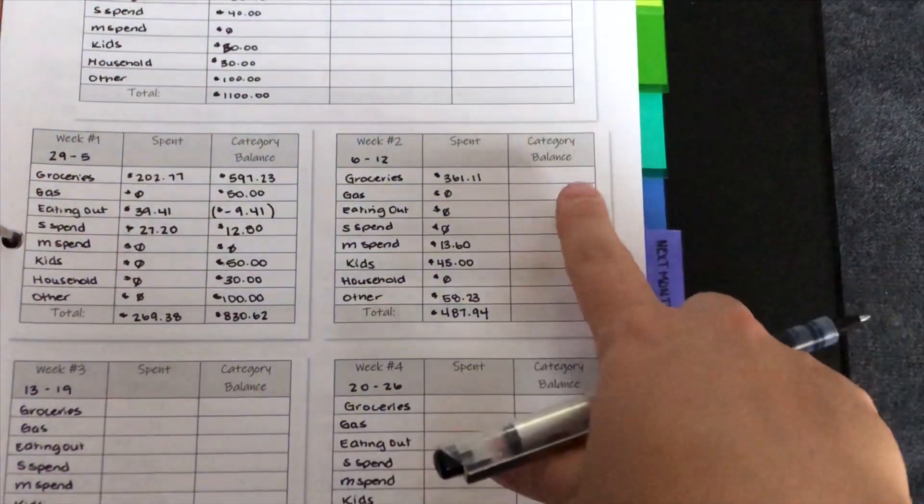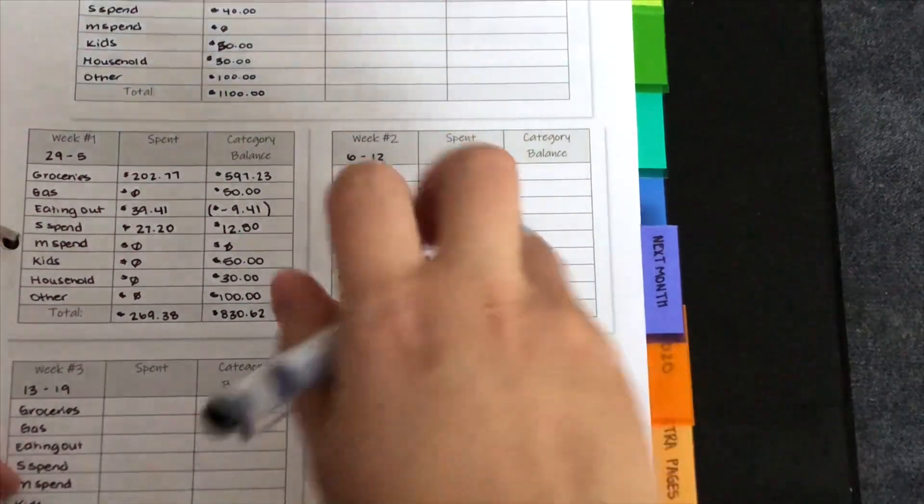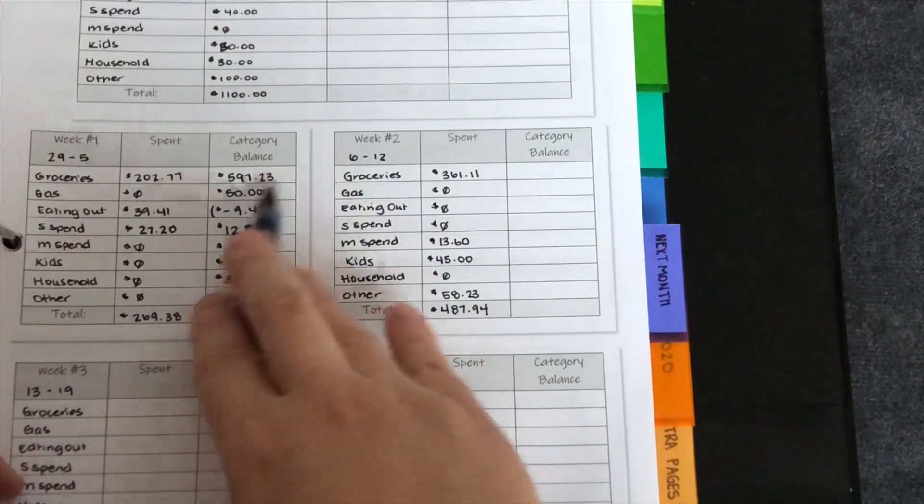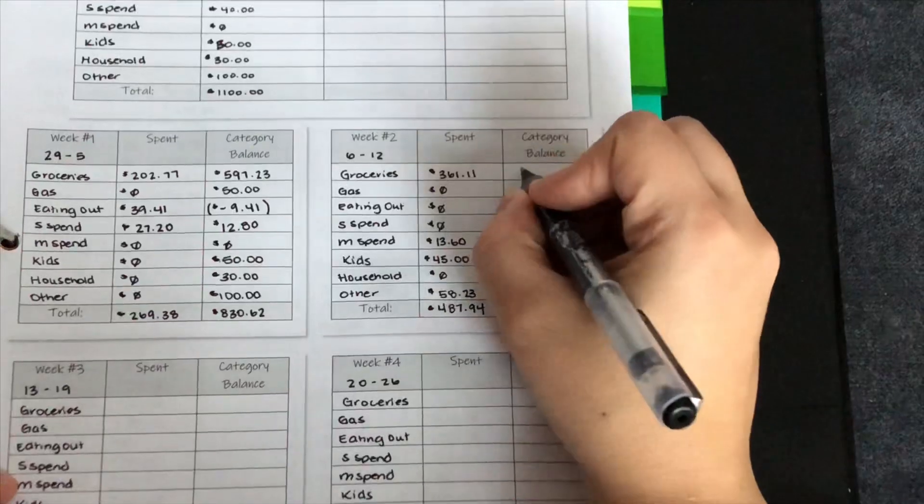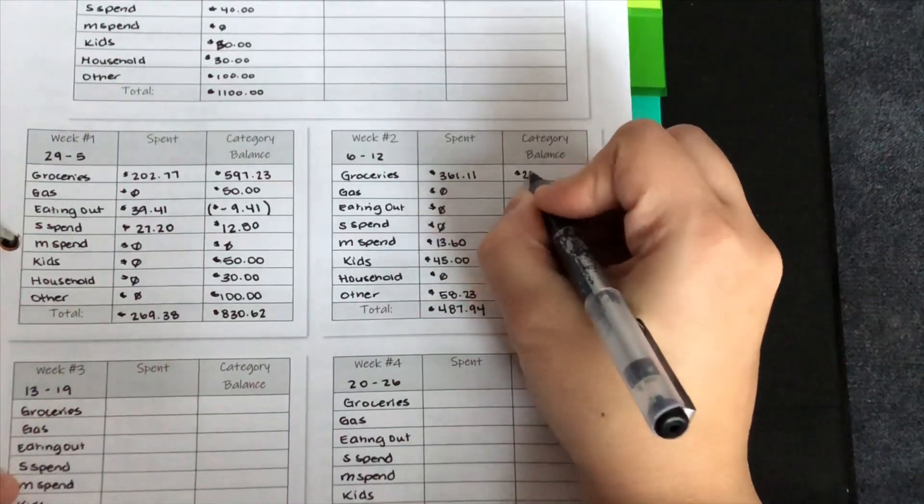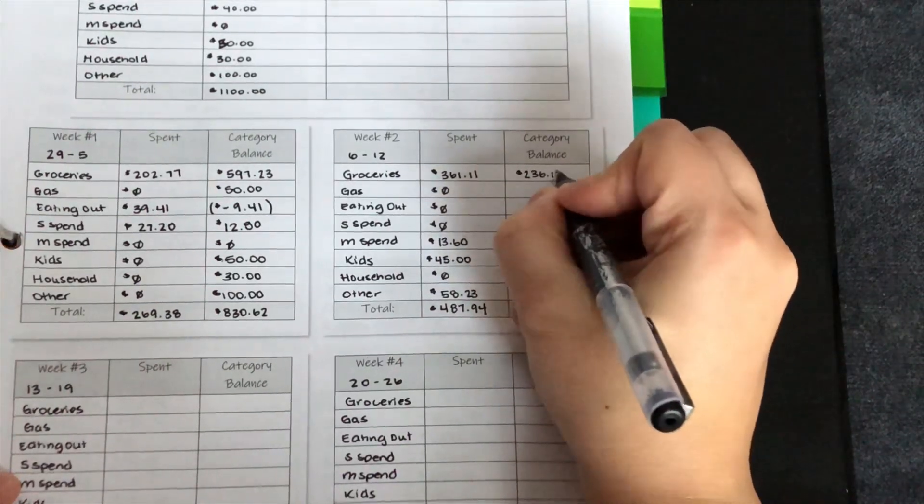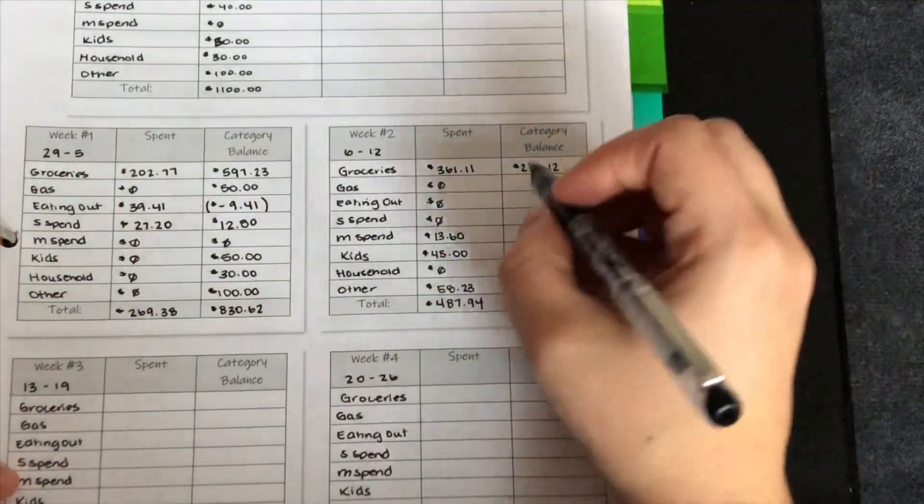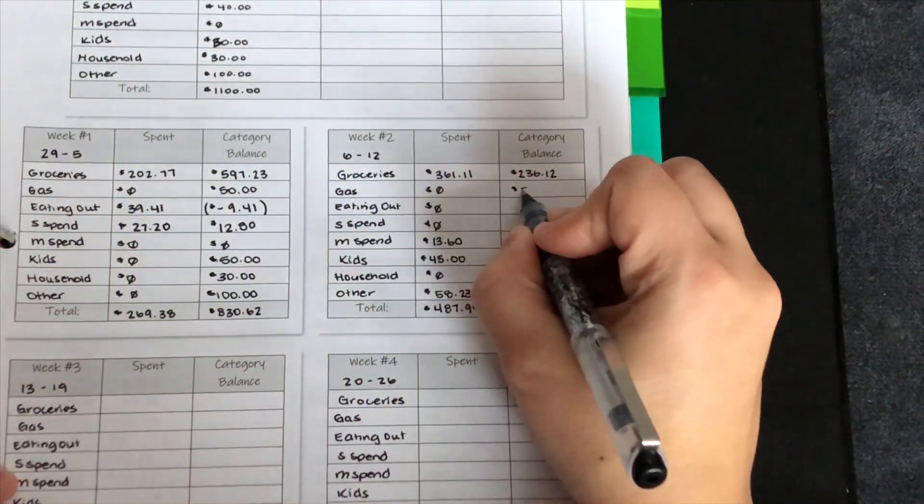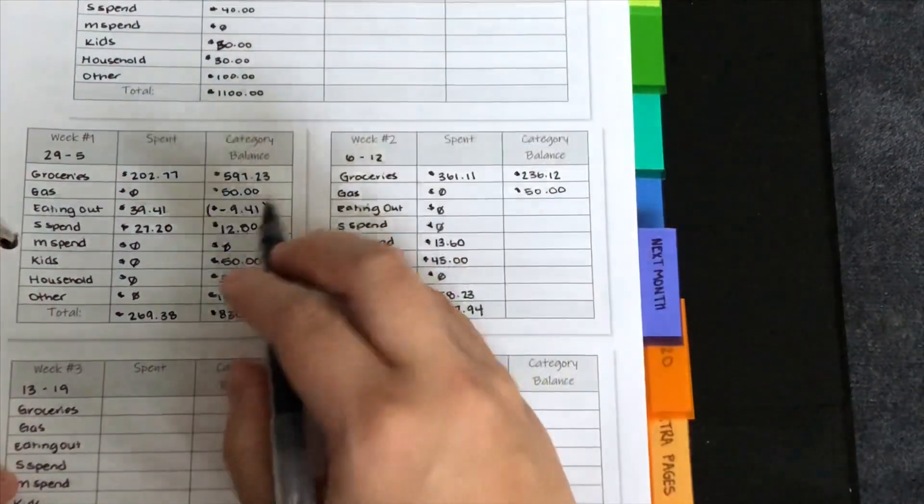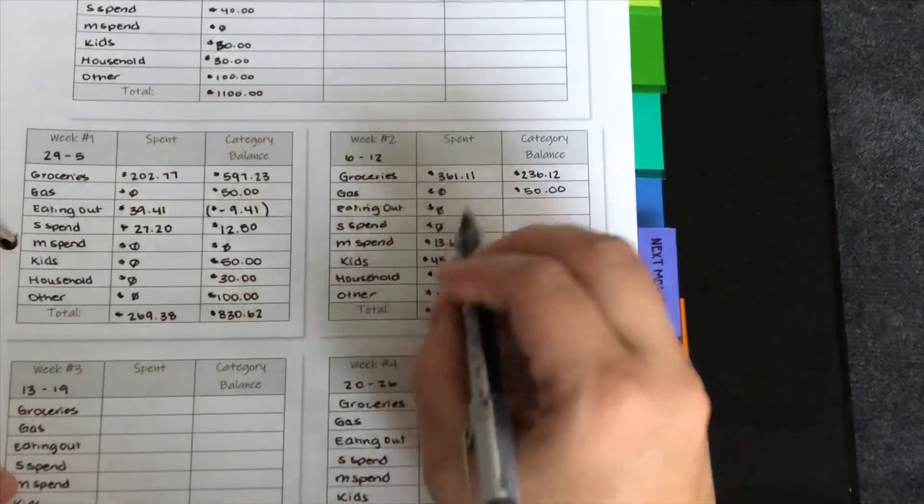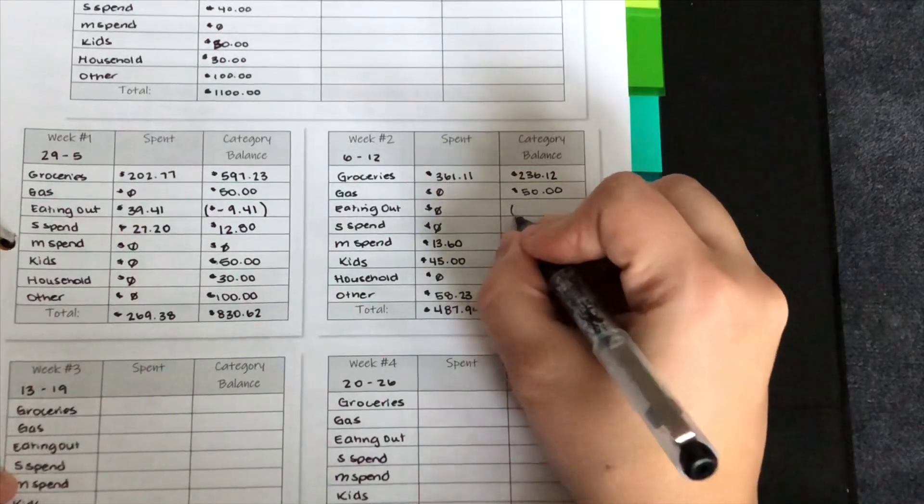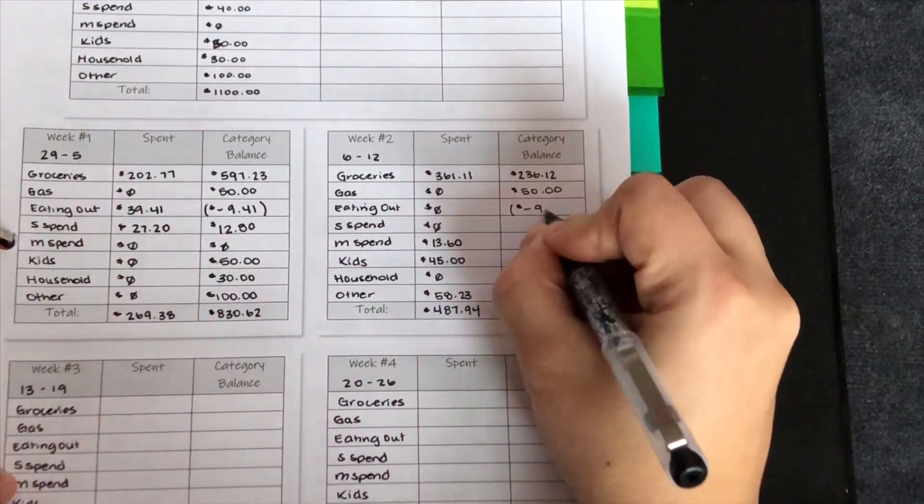So for the category balance, what we do is take this ending amount and subtract the spent amount. And for groceries, that would be $236 and 12 cents remaining. We had $50. We spent $0 for gas. So we still have $50. We overspent last week in eating out and we didn't spend anything this week. So we are still negative $9 and 41 cents.